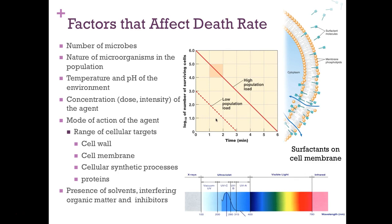Temperature and pH within the environment also affect death rate, as covered in chapter 6. Additionally, concentration, dose, or intensity of an agent matters. For UV radiation, the spectrum ranges from 100 to 400 nanometers, with 260 nanometers being most effective at causing microbial death. Most disinfectants are more active at higher concentrations; if treating an inanimate object where harm is not a concern, you want to use a higher concentration.